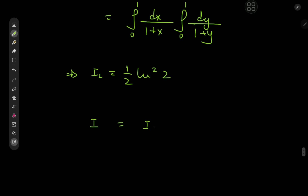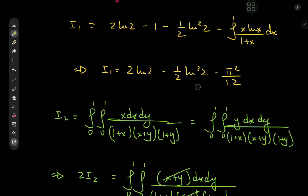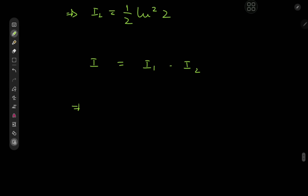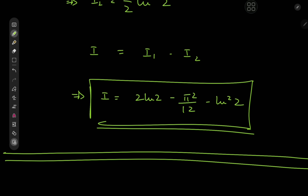Recall that the target integral I was actually I₁ minus I₂. The −½·log²2 in I₁ and the −½·log²2 from subtracting I₂ combine to give one whole log²2. So the target integral I equals 2·log 2 − π²/12 − log²2. I quite enjoyed the solution development there, and I hope you enjoyed the video as well. Be sure to like and subscribe, share the video, drop me a follow on Instagram, and if you like the channel and the effort I'm putting out, you can support me on Patreon. All links are in the description box. Thank you, see you next time.